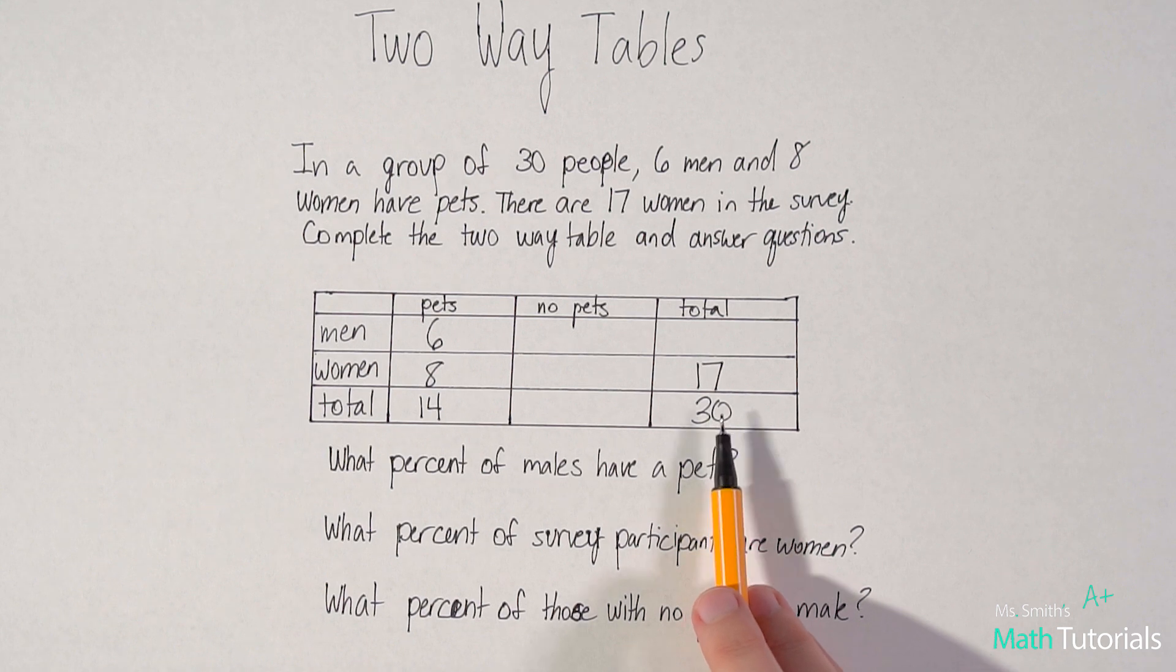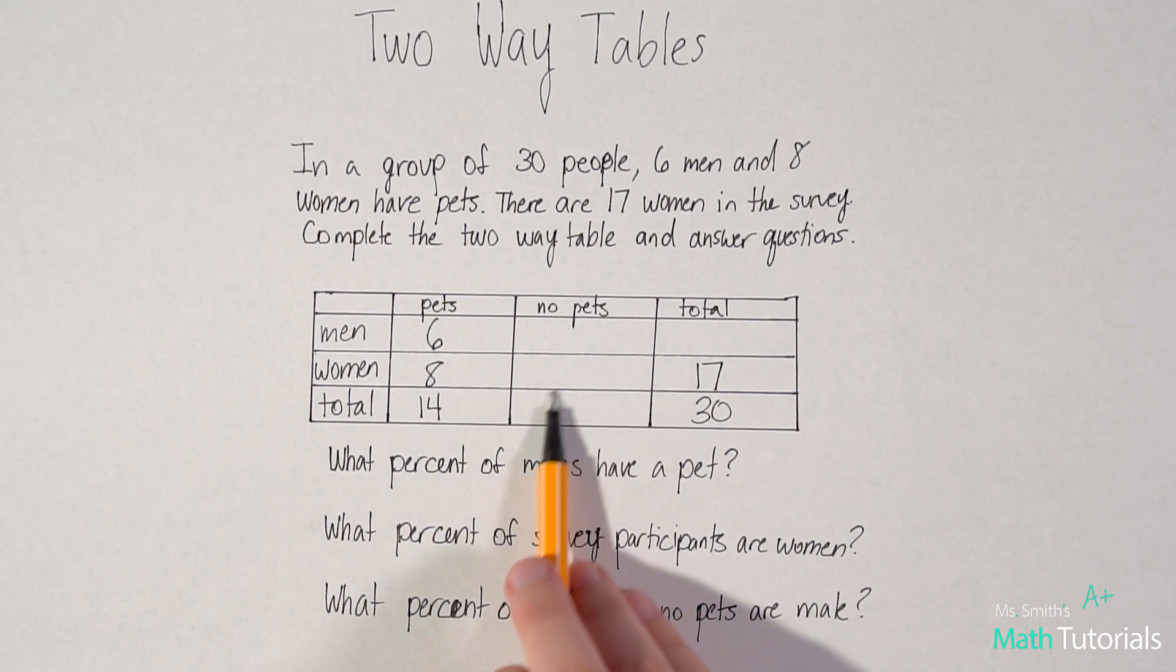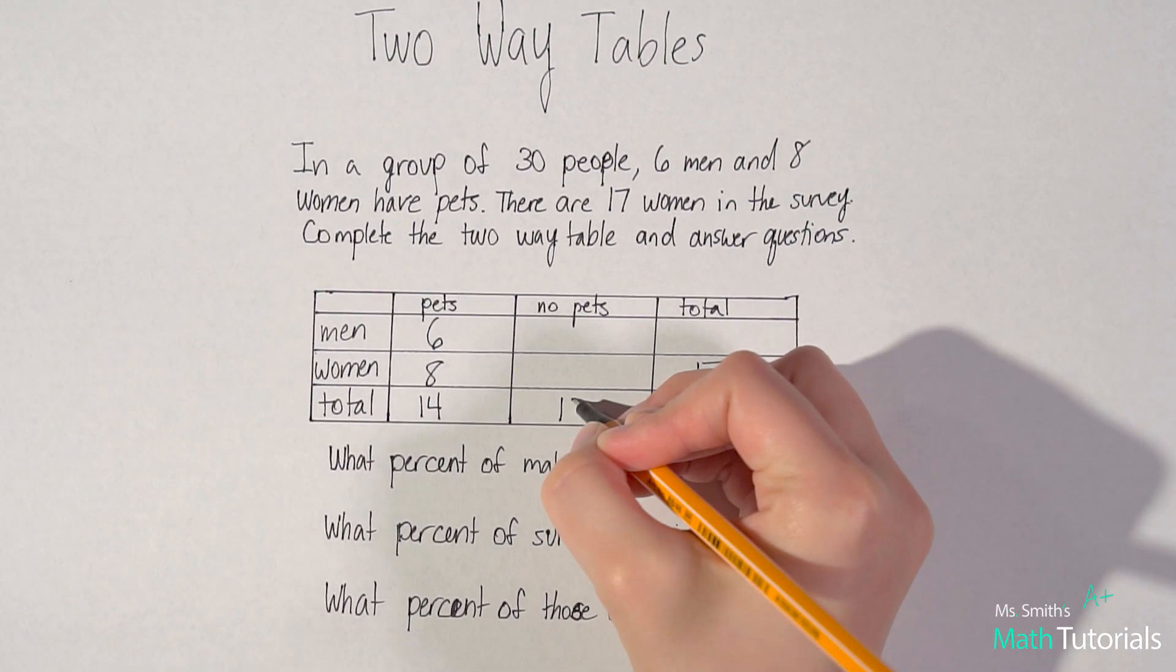So couldn't I do 30 minus 14? And that would tell me this difference here? Yeah. So 30 minus 14 would be 16.